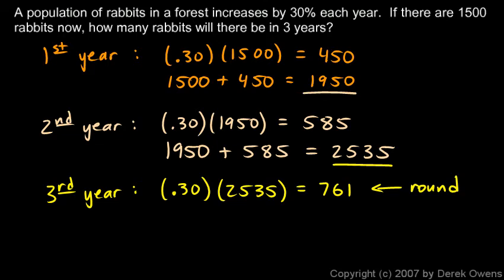So now that's the increase in population the third year. So remember, my third year started out with 2535, so I'm going to take that number, 2535, and add the growth there of 761 more rabbits, and that comes out to 3296.